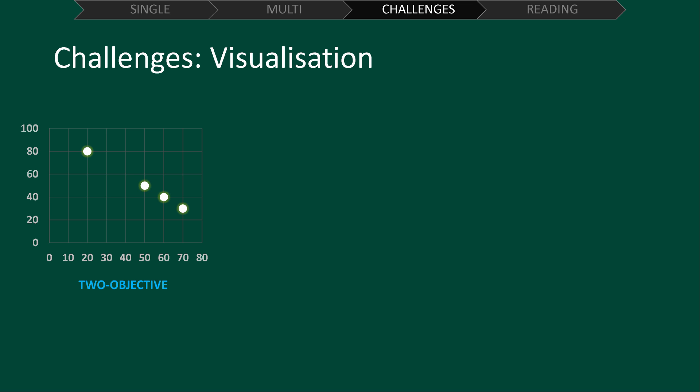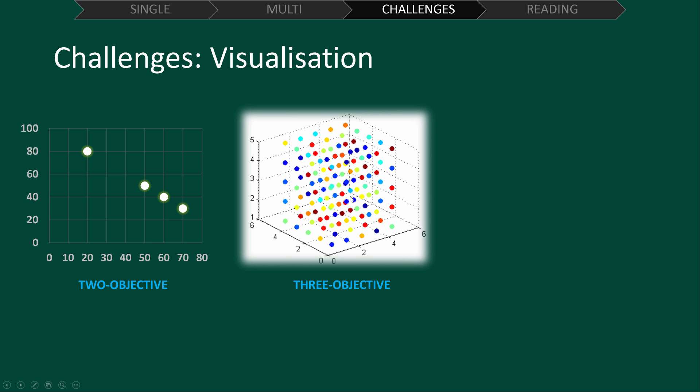However, what if we want three objectives? We can use a three-dimensional scatterplot. Here, we can still see how far solutions are from each other and if one dominates another. It's just a bit harder to see.